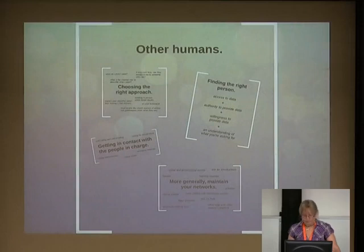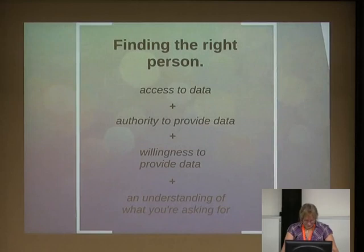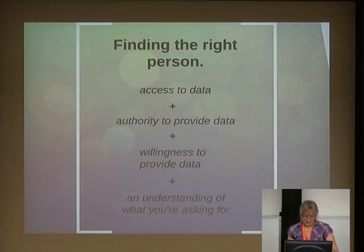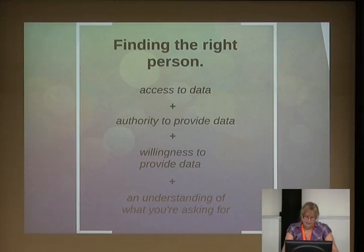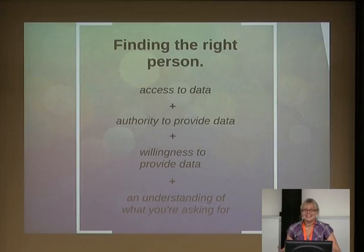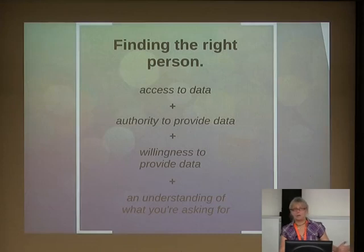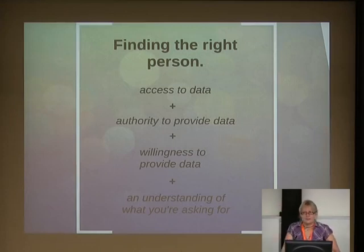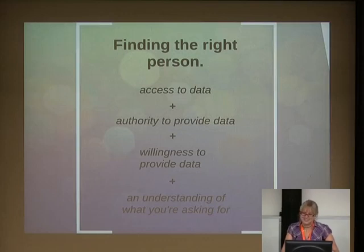Now this really should probably be first, and I always leave it to last: other humans are one of your greatest resources if you can find the right one. The difficult thing is finding the person who has the access, the authority, is willing to provide it, and understands what you're asking for. Sometimes the willingness to provide it can be a really big stumbling block — they don't understand why you need it, they don't understand what value it adds, or they're worried they'll get in trouble. It seems to be a level thing: people at director level tend to whitelist what they release instead of releasing unless there's a reason not to.